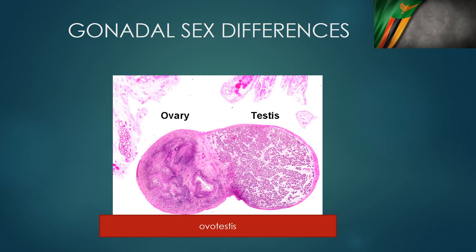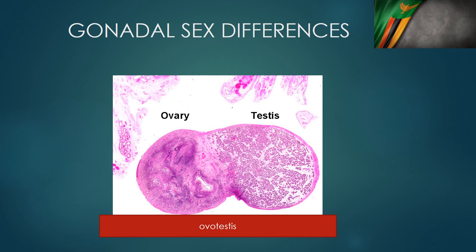Gonadal sex can be equally complex. A person might have an ovary on the left and a testis on the right, a dysfunctional testis and a functional ovary, or a functional testis and a dysfunctional ovary. As the slide shows, they might have a combination of an ovary and a testis — an ovotestis. So which is it: are you male or female based on gonad type?